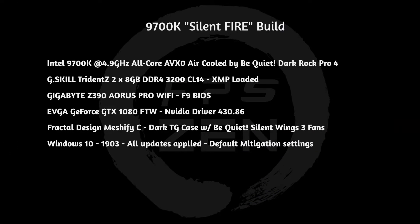Today I'll be benchmarking games, content creation, temps, and power. This is an air-cooled rig, so it will go head-to-head against AMD's air-cooled setup. All game benchmarks are done at 1080p, which stresses the CPU the most and shows the biggest difference between the two CPUs. My 9700k is running at 4.9 GHz all-core with AVX offset zero, air-cooled by the be quiet Dark Rock Pro 4.